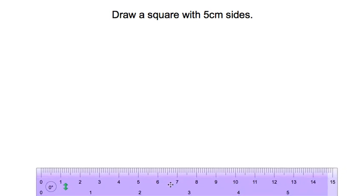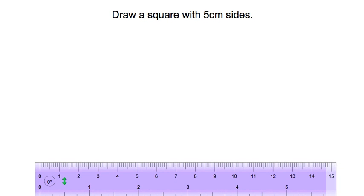This is a mini lesson on how to draw a square using a protractor and a ruler. For my first step, I'm going to draw with my straight edge ruler here a nice long line.